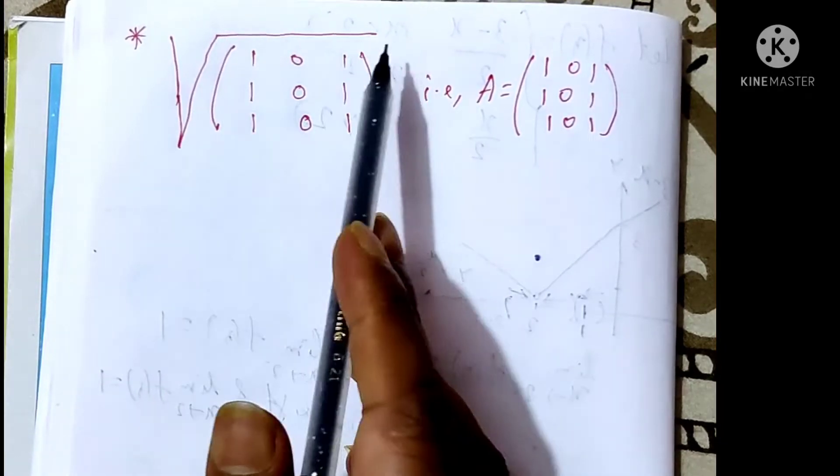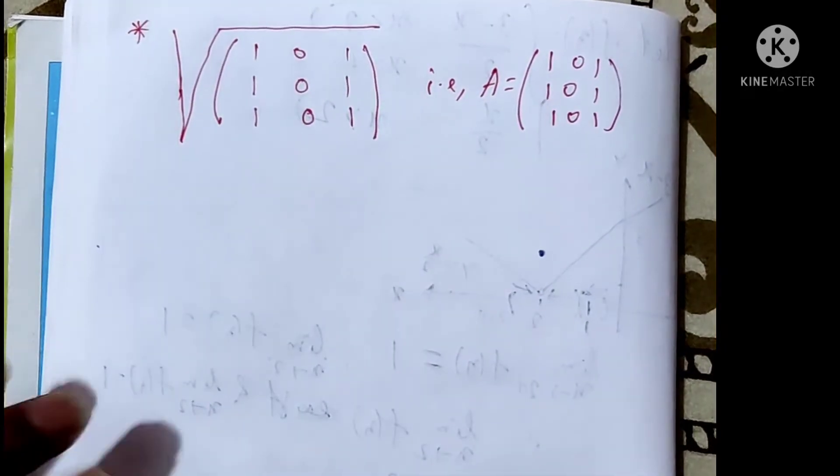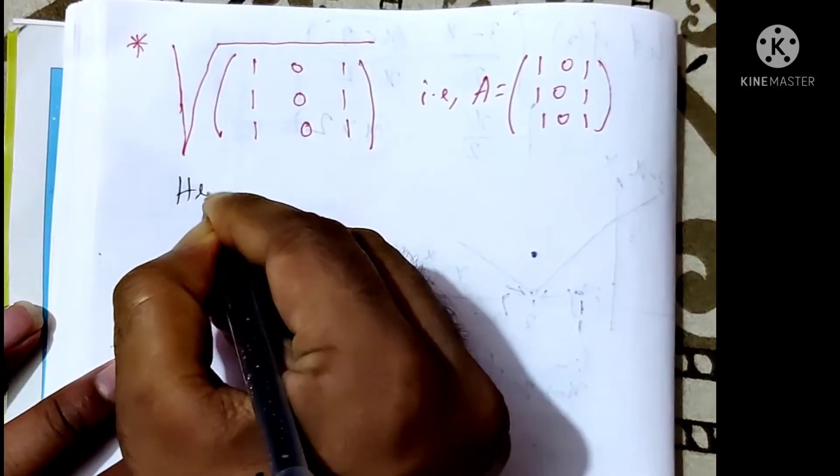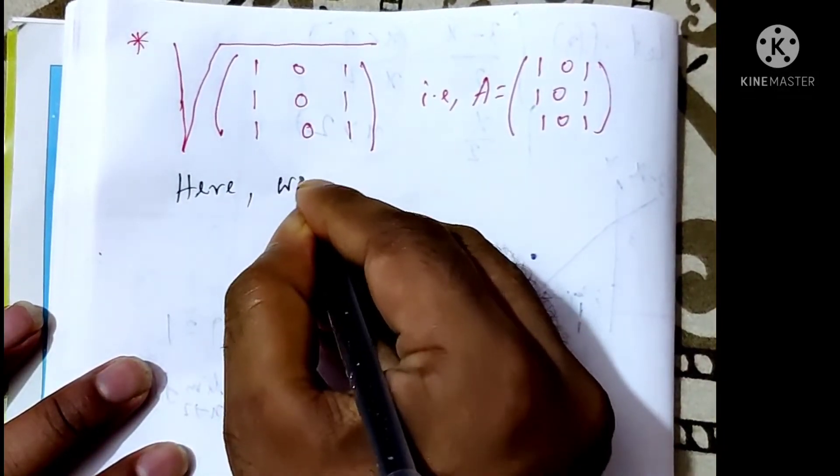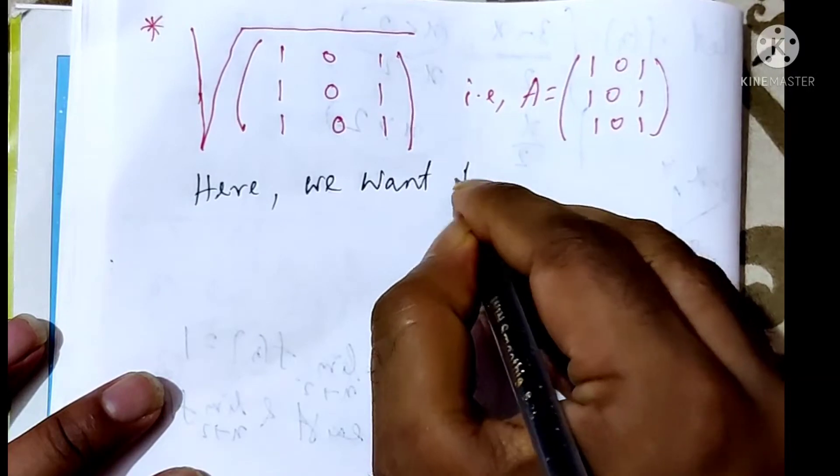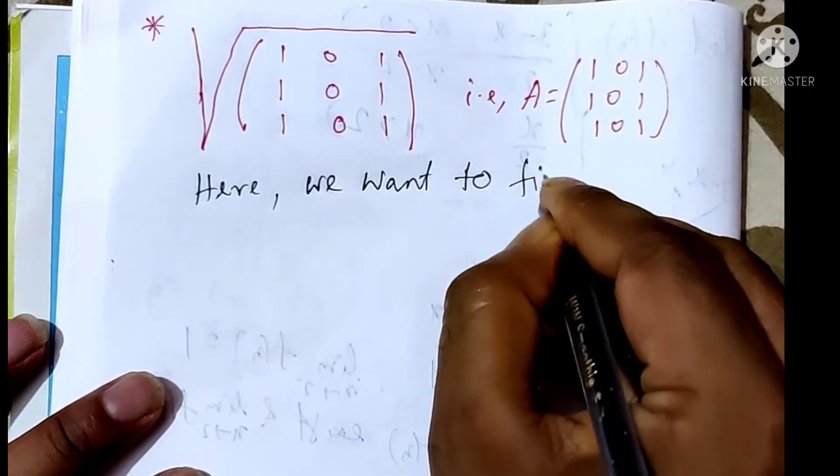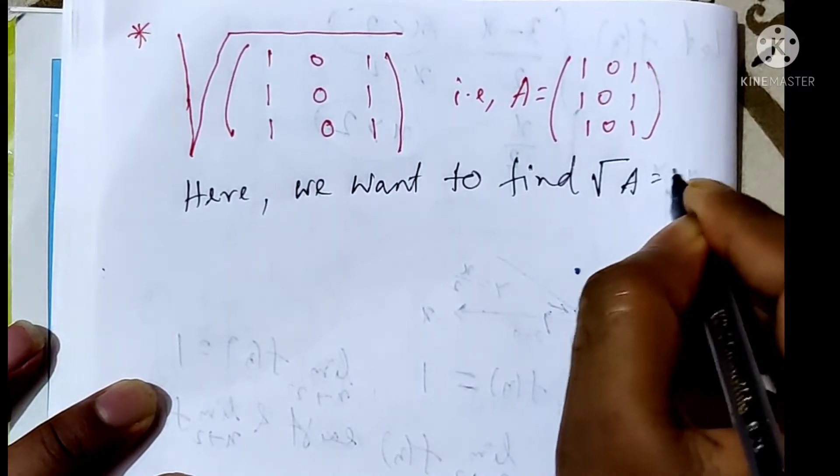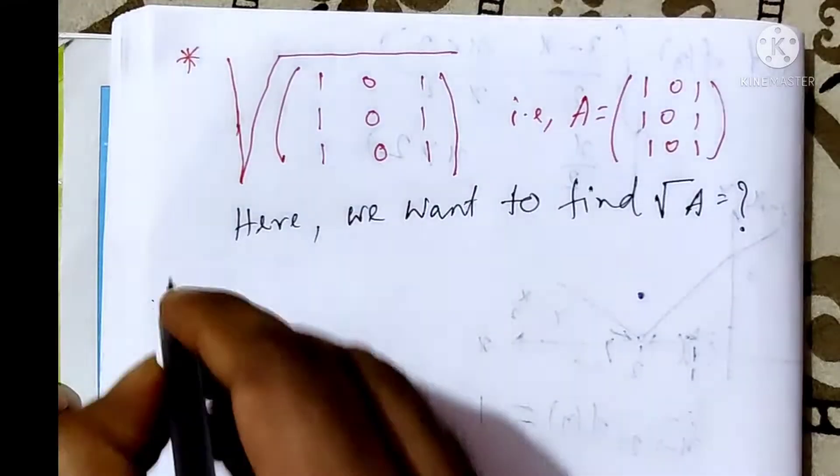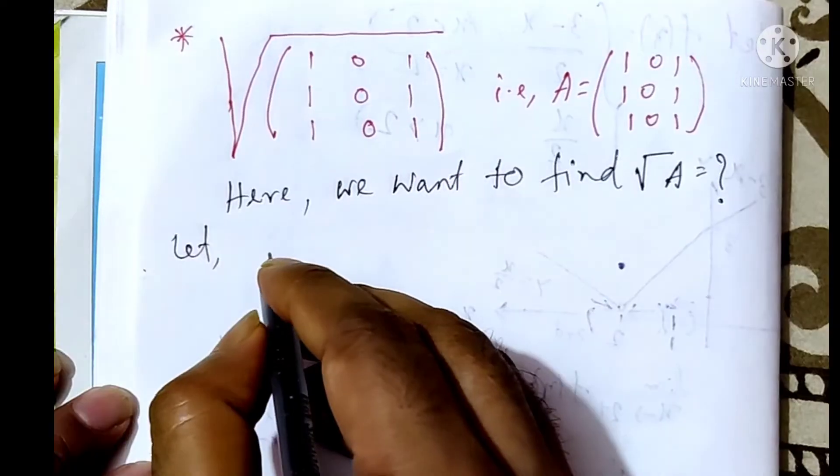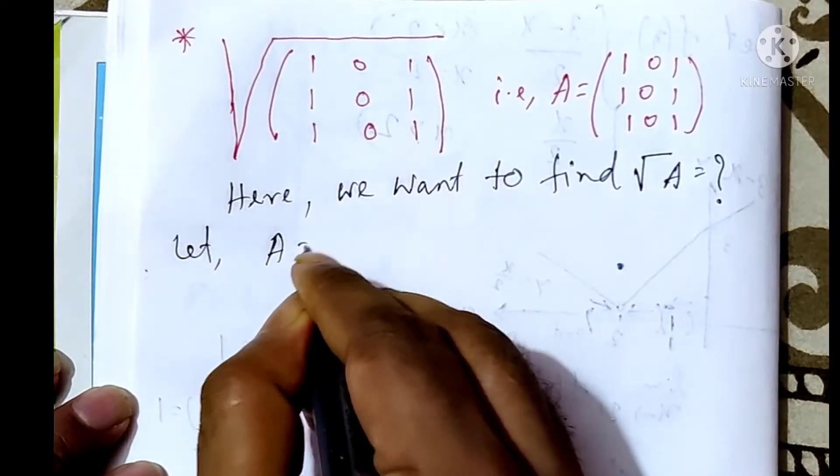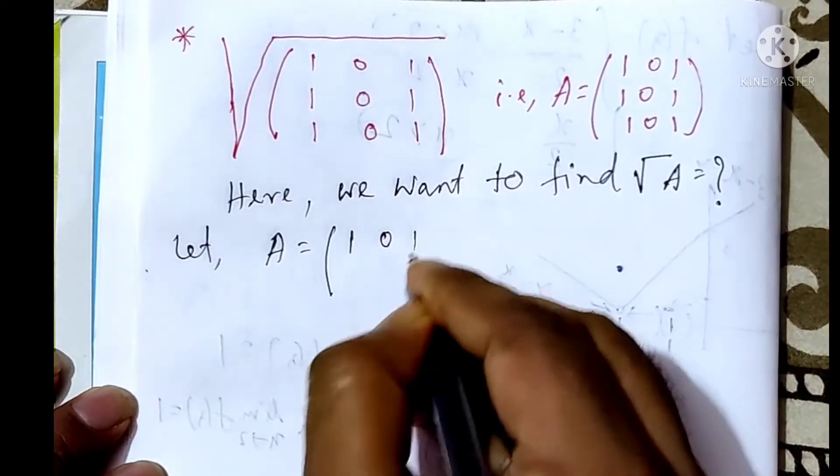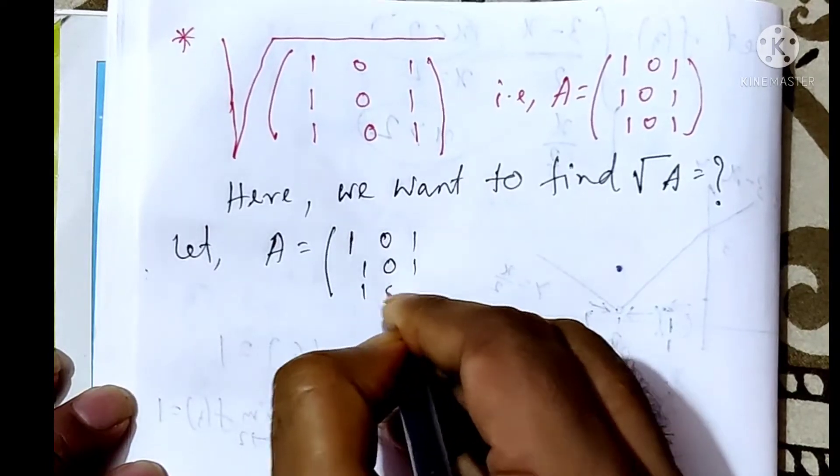What is the root of matrix A? Here, we want to find the root of A equals to what? What is the value of root A? Let A equals to this: 1, 0, 1, 1, 0, 1, 1...